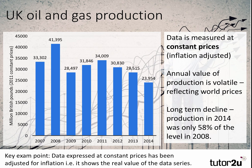One must suspect that output in the sector is influenced by the level of world prices. So when world prices are low, as they were in 2014 and 2015, the value of output is lower, and also the capital investment in drilling and exploring for oil and gas. The key exam point is that this data is expressed at constant prices — look for that when you get charts and tables. Whenever the phrase 'at constant prices' is mentioned, you can be sure that the data has been adjusted for inflation.